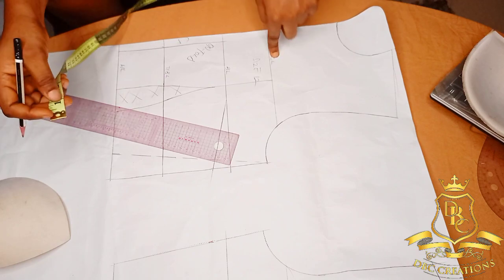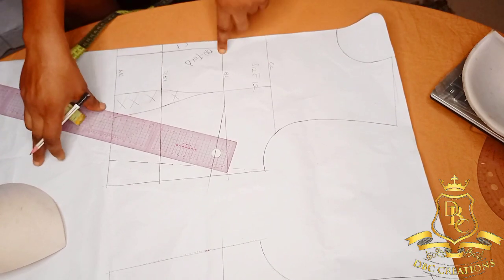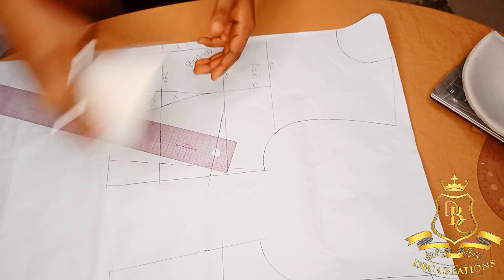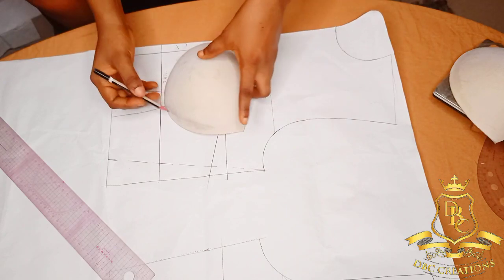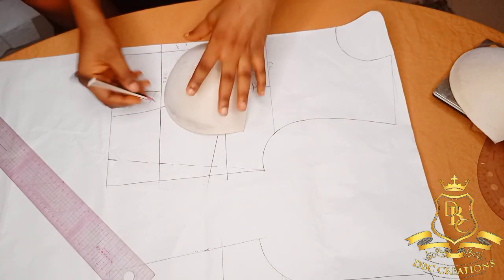This is my chest line, this is my bust line, this is my underbust. So I'm going to use my cup. I will make sure that my cup lies under the underbust.